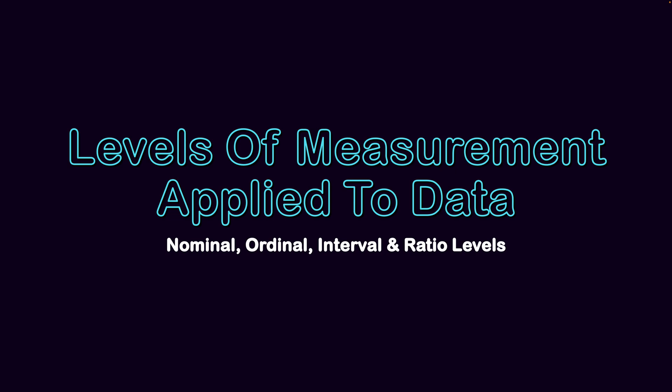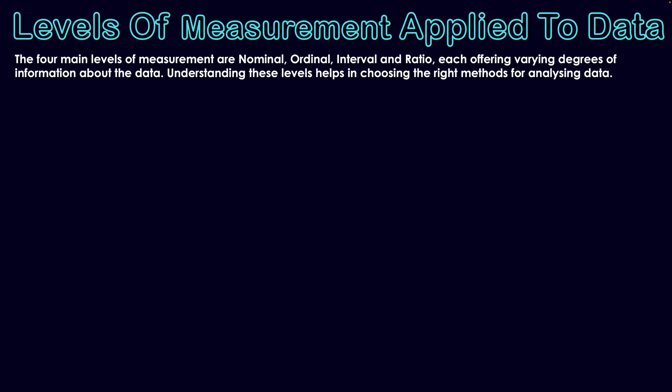Levels of measurement applied to data: nominal, ordinal, interval, and ratio. The four main levels of measurement are nominal, ordinal, interval, and ratio, which we learn about in this enterprise computing course in order to analyze the data contained within data sets. Understanding these levels helps in choosing the right methods for analyzing data. We're going to look at these four different categories today, align them with their quantitative or qualitative categories, and explain how the data they measure is represented differently between them.